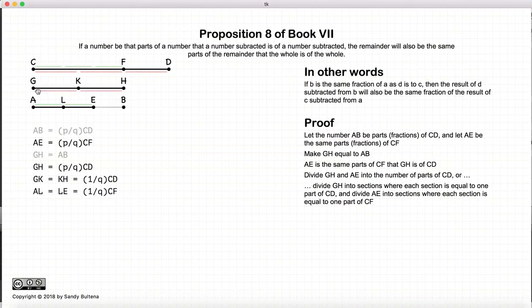Likewise, we are going to divide GH into parts that are demonstrated by this little pink line, which in this case is 2 thirds, so we are going to divide GH into 2. So we're dividing GH into 2, and we're dividing AE into 2, because in this particular example, the fraction is 2 thirds.